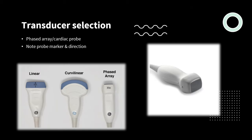When you start your cardiac exam, you will want to choose the correct transducer. You will select the phased array transducer, also known as the cardiac probe, for these images. You'll have to note the probe marker, which is a very important aspect of any ultrasound probe. You need to know the probe marker location to ensure correct orientation for your images.